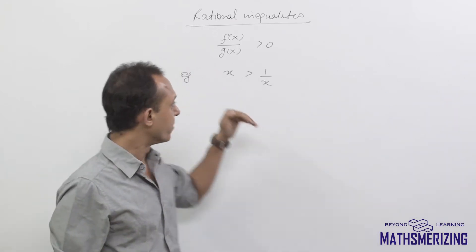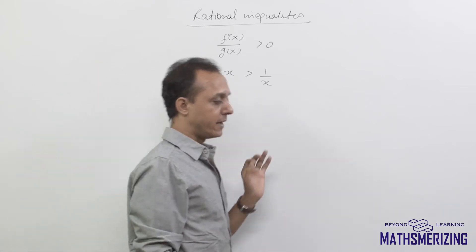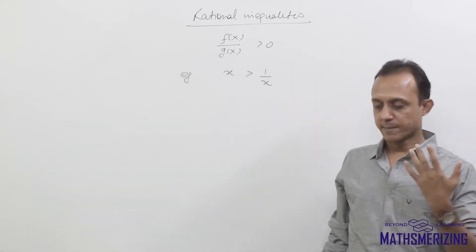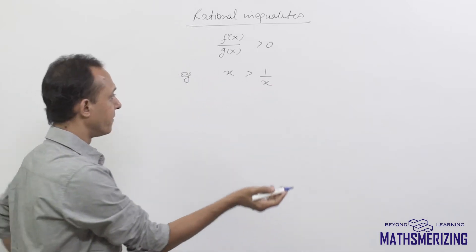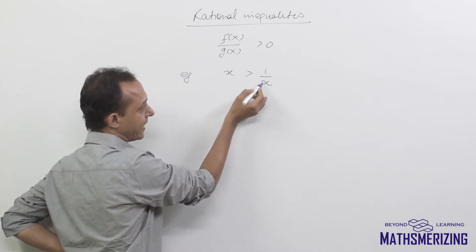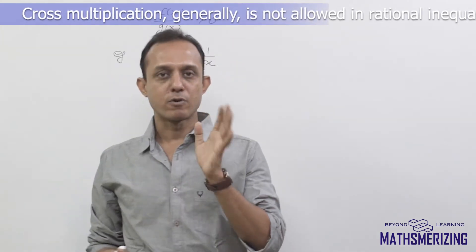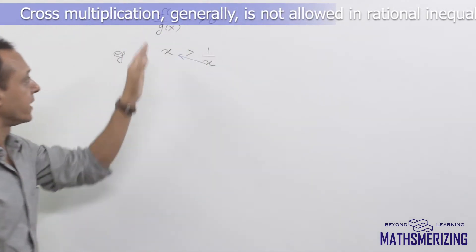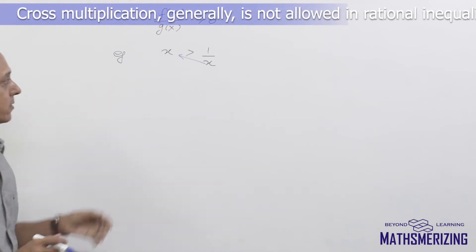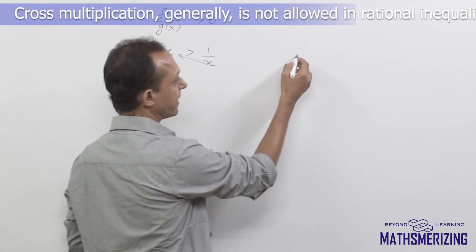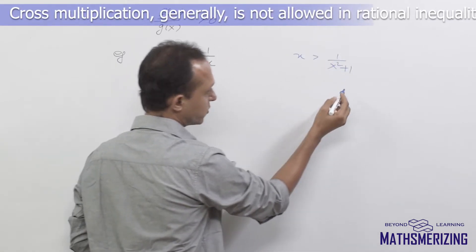We have some expression in the numerator and some expression in the denominator. The steps to solve any rational inequality are almost the same. The first thing to keep in mind is we cannot cross multiply. For example, if x is greater than 1 upon x squared plus 1, we cannot simply cross multiply x to the left hand side.